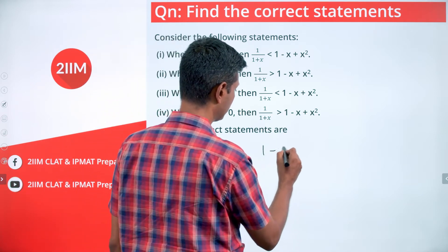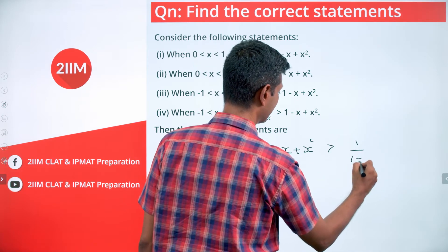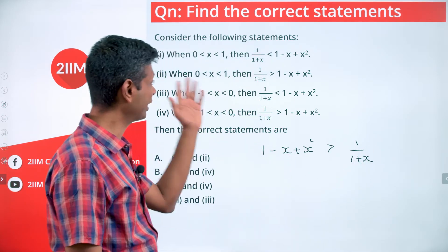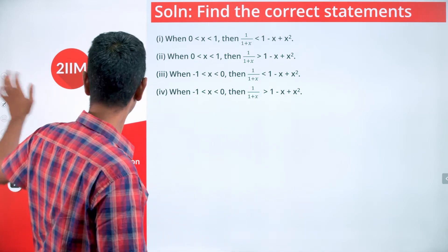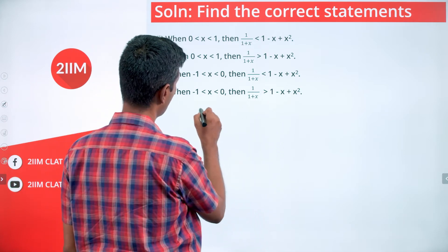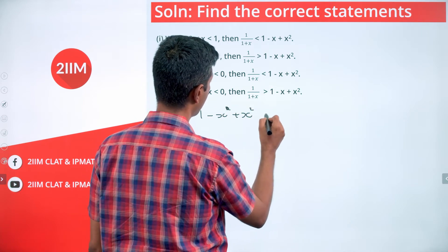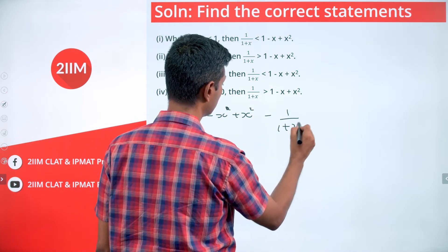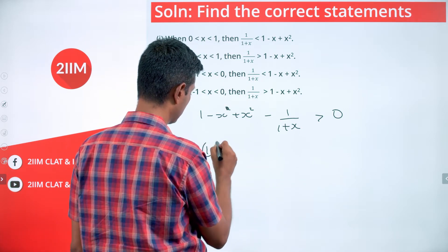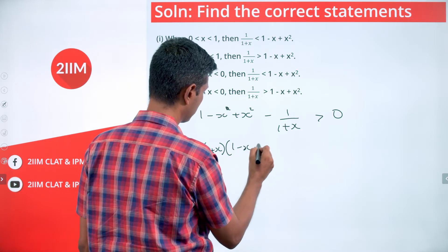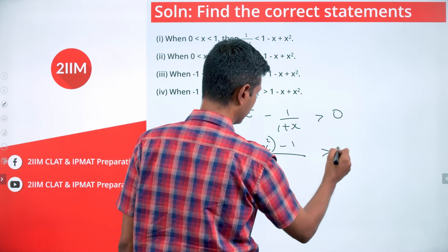When is 1 - x + x² greater than 1/(1+x)? Let's solve for this inequality and then plug it in. Effectively, set 1 - x + x² minus 1/(1+x) greater than 0. The LCM is (1+x), so we have (1+x)(1 - x + x²) - 1, all divided by (1+x), greater than 0.